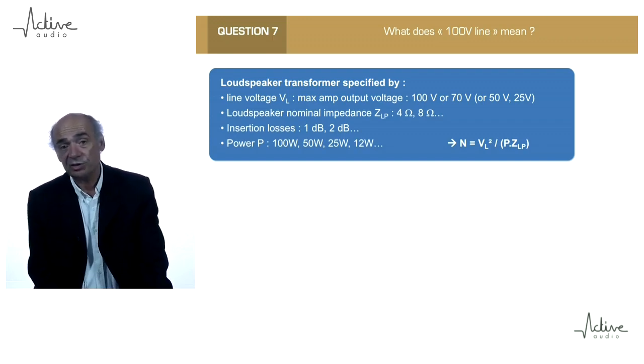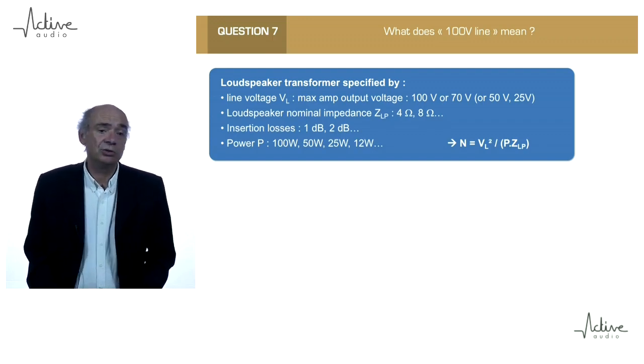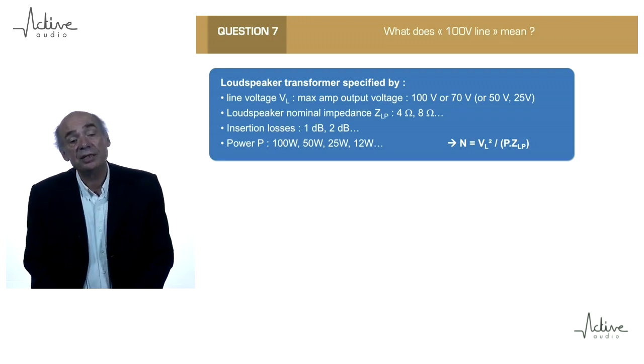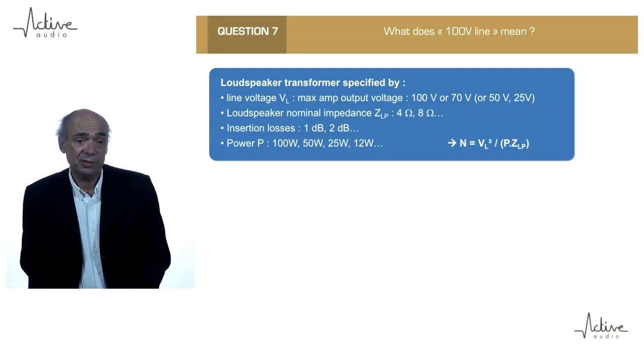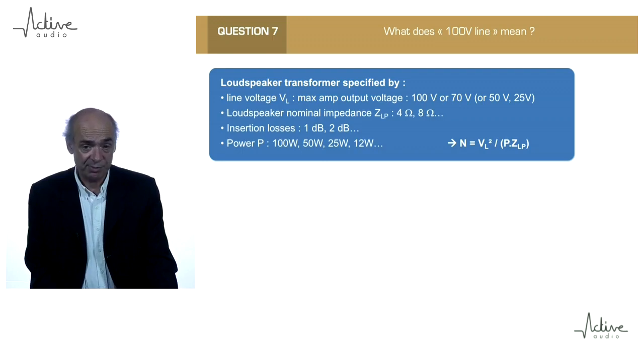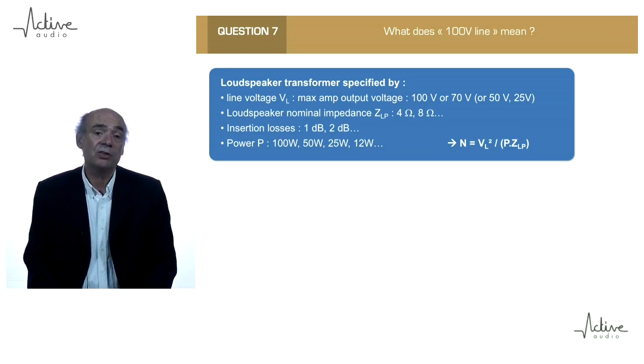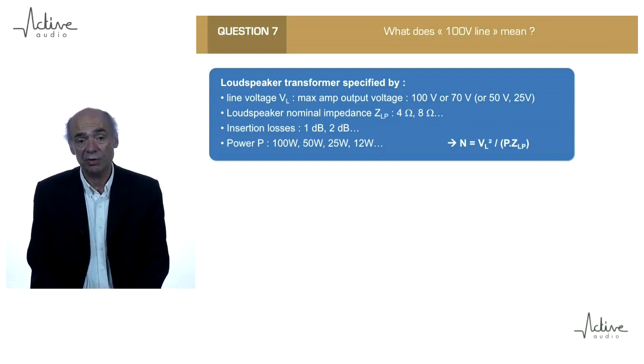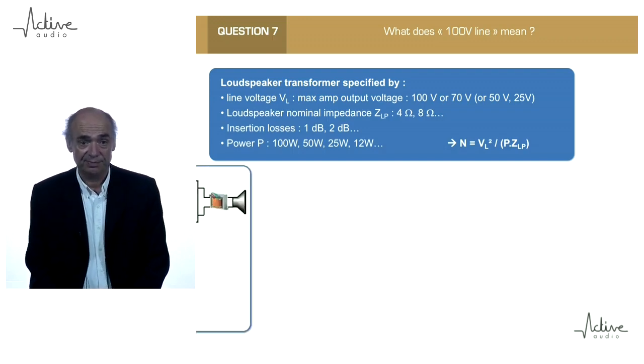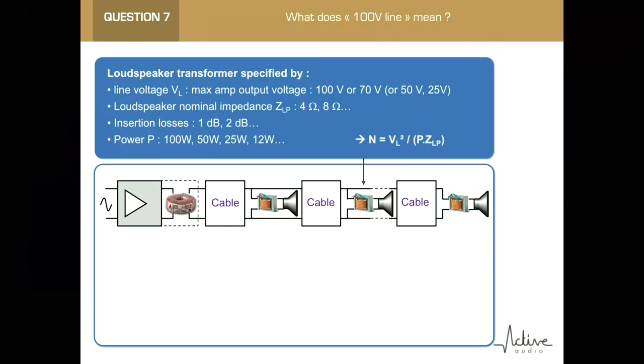Of course, there are losses in the transformers, like 1 or 2 dB losses. And the other specification is the power tap of the transformer. The equation of the transformer ratio depends on the line voltage and the power of the tap.